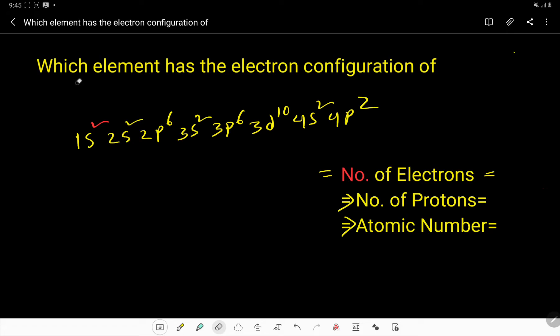Which element has the electron configuration of 1s² 2s² 2p⁶ 3s² 3p⁶ 3d¹⁰ 4s² and 4p²? To find out the name of this element, we first have to count the number of electrons present.